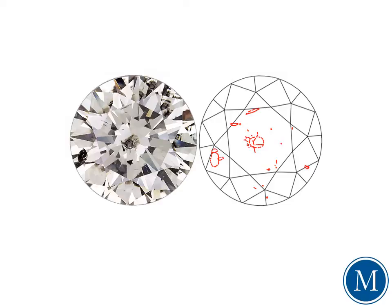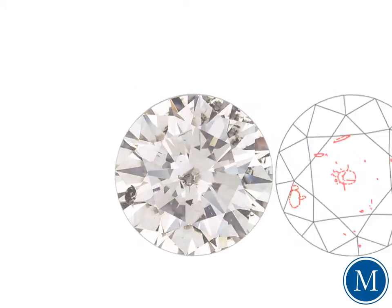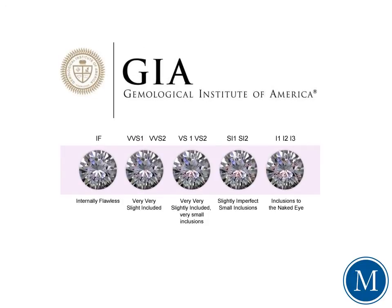Now, for the purpose of diamond grading, all flaws are referred to as inclusions. The Gemological Institute of America, or GIA as it is regularly known, categorizes diamond clarity on a scale ranging from FL, or flawless, being the highest grade, to I, or included, where imperfections may be visible to the naked eye.